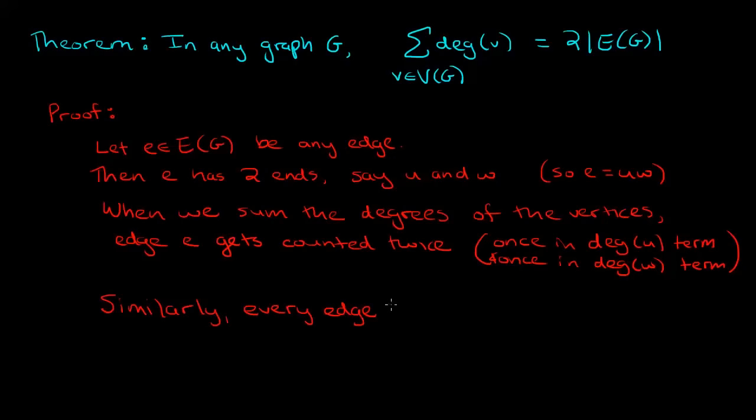Similarly, every edge gets counted twice. Because what we just did was to take any edge and show that it gets counted twice. What this means is that in our sum of the degrees, we are actually summing up every single edge exactly twice. So that concludes our proof.